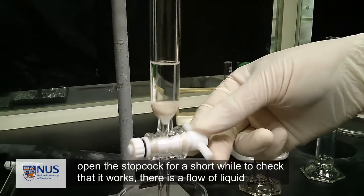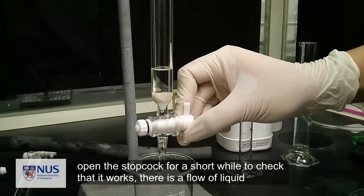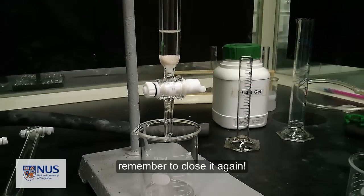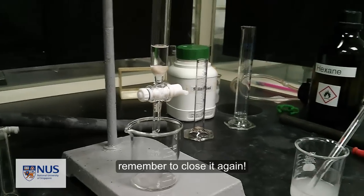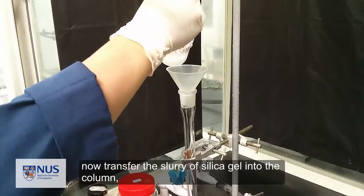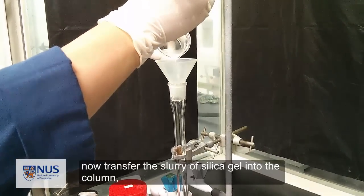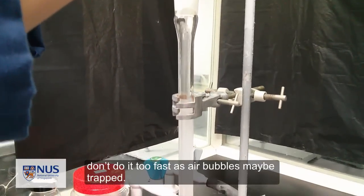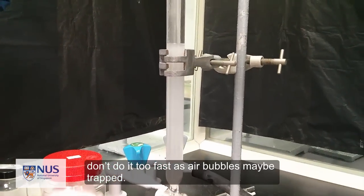Open the stopcock for a short while to check that it works. And then now transfer the slurry of silica gel into the column. Be calm and stoic. Don't do it too fast as air bubbles may be trapped.